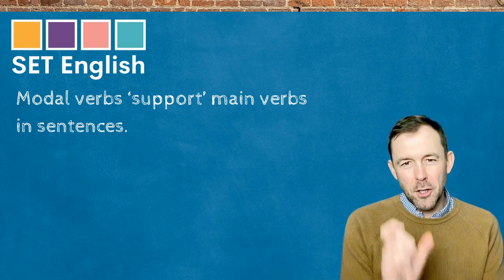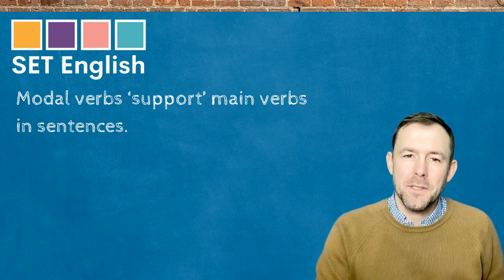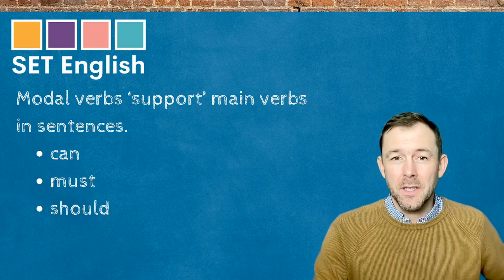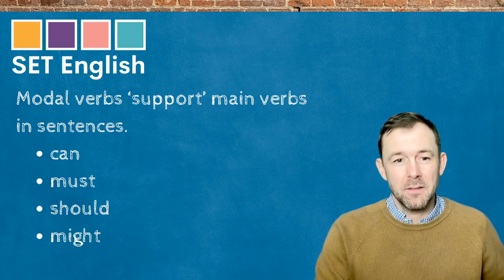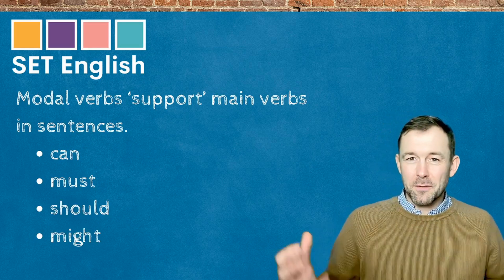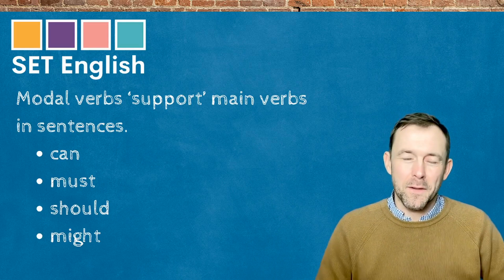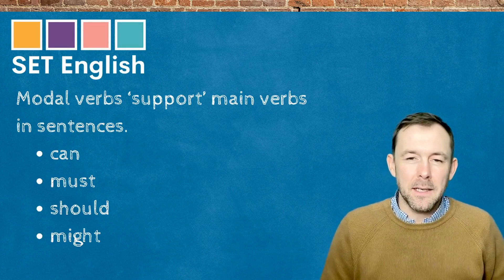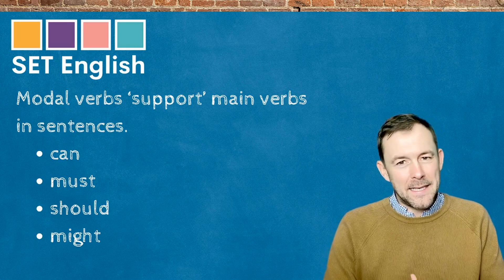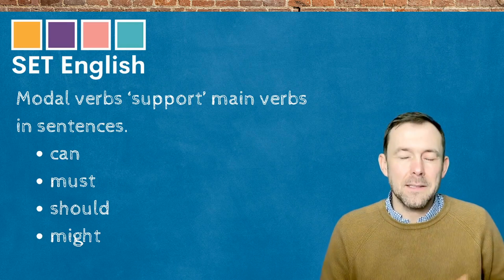Modal verbs are verbs which support the main verbs in sentences. An example of a modal verb would be can, must, should, might. They're all common modal verbs that we use. They have lots of different functions in English — I'm not going to go through all of those functions now, but things like permission, ability, advice, obligation, prohibition — things like that.